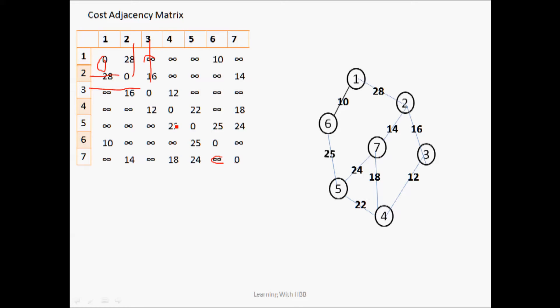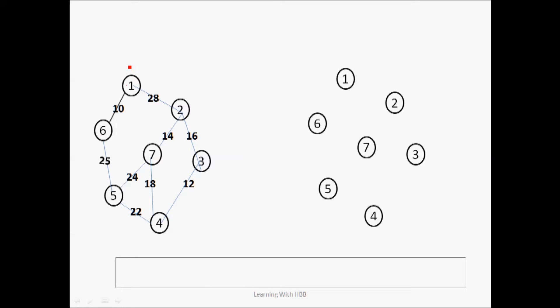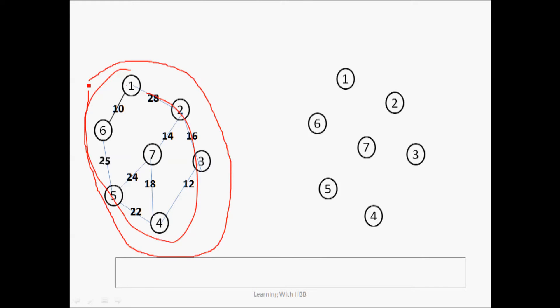If there is an edge between two vertices, we put the weight corresponding to that edge. To construct a minimum spanning tree using Prim's algorithm, we consider this graph. The key idea is that we will choose an edge with the minimum weight. Among all edges, 10 is the minimum weight — between vertices 1 and 6 — so we will first draw that edge.